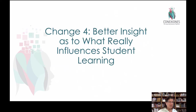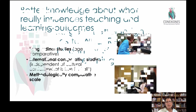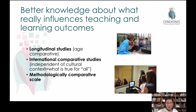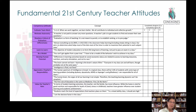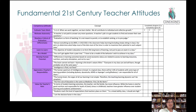The fourth big change has to do with understanding what really influences student learning outcomes. A lot of this has to do with the existence of more longitudinal studies, studies that are internationally comparative, and also methodologically comparative scales — thanks to the work of John Hattie, for example — where we can mix and match quantitative and qualitative information. All of this comes down to looking at teacher attitudes, and what are the fundamental attitudes of great teachers in the 21st century? It's no longer just about professional development to learn a new skill set, but fundamentally what things have to change based on new information from the brain and technology.